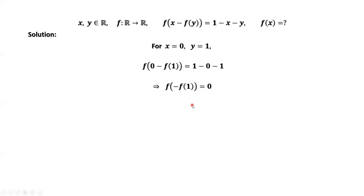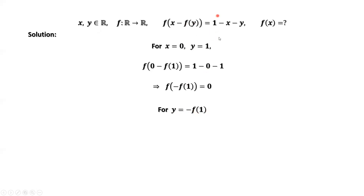We have this result. This is an important result. Now you can see why we pick x equals 0 and y equals 1. We find such a y, which is negative f of 1, satisfying the condition f of y equals 0. That means we can get rid of this term. The next step is to select y equals negative f of 1 and replace y by negative f of 1 in the given equation.